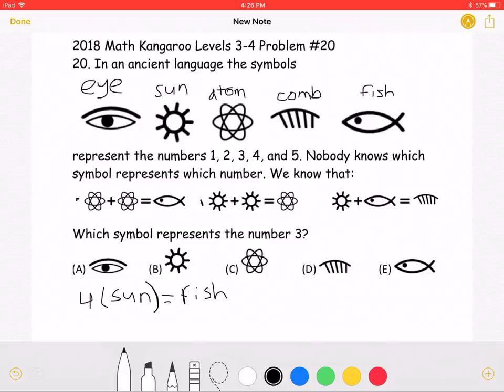Because the fish is equal to 4 Suns, and 4 is the only number out of 1 through 5 that is divisible by 4, the fish must represent the 4.